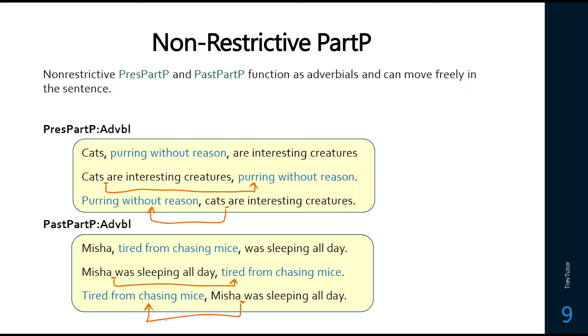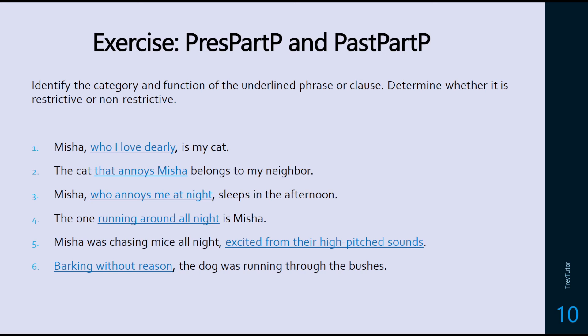When you see these phrases at the beginning before a comma, ask yourself what is it modifying. It should be modifying a noun if you're looking at a present participle or past participle phrase — if you put it back into its original position. Now determine what type of phrase or clause each underlined item is and whether it's restrictive or non-restrictive.